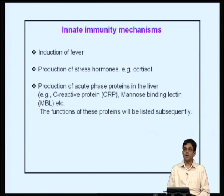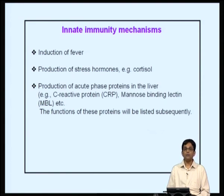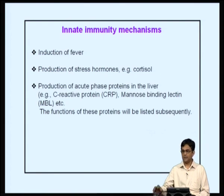Key mechanisms include the induction of fever — cytokines such as IL-1 are produced, which result in fever induction. There is also production of stress hormones such as cortisol, which is thought to suppress immune responses and may be part of a network to regulate the innate immune response. Acute phase proteins are produced in the liver, including C-reactive protein and mannose-binding lectin, all of which have antimicrobial functions; their detailed mechanisms will be discussed subsequently.